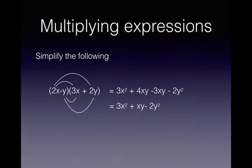And you'll notice there, from the line 3x squared plus 4xy minus 3xy minus 2y squared, the middle two terms are like terms, because they both have xy in them. So I have 4xy, and I have minus 3xy.